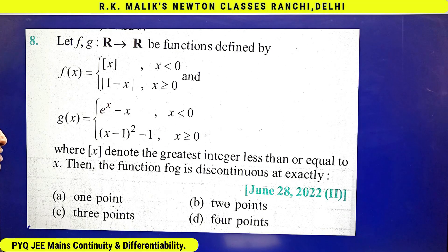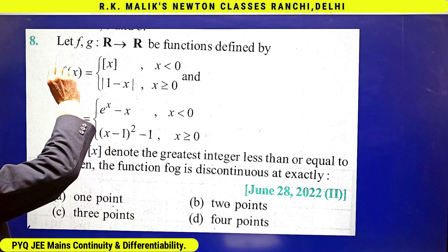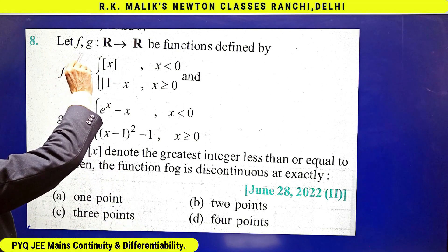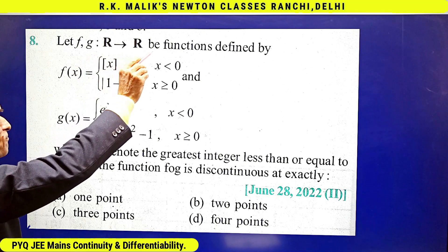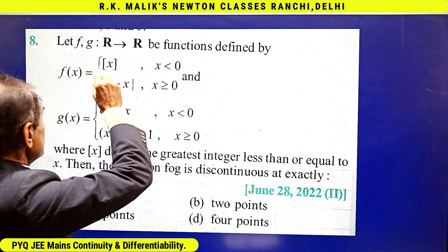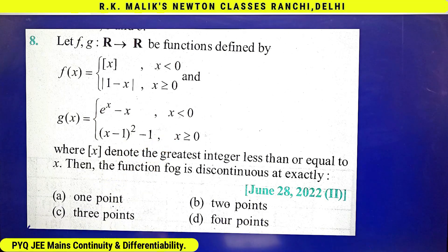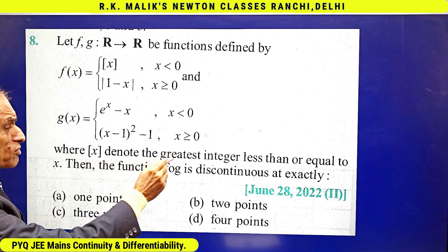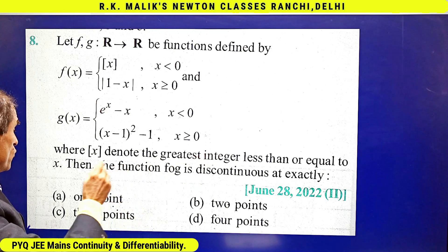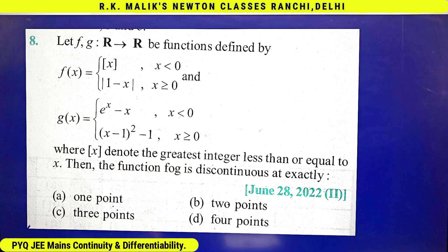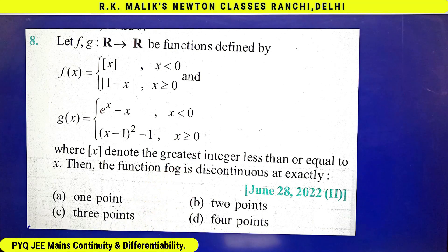This question requires us to discuss the continuity of a composite function. It is given that f and g are functions from R to R, defined by f(x) equal to a given expression and g(x) equal to another, where the box notation denotes the greatest integer less than or equal to x. We have to find at how many points f∘g(x) is discontinuous.